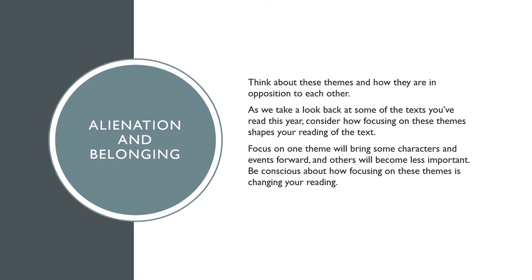Getting back to our themes for this lesson, we're going to look at alienation and belonging. These themes are really in opposition to each other — they're kind of opposite ends of the same continuum. We're going to look at how to apply these to some of the texts that you've hopefully read over this year. As we look at these themes, it's going to bring some elements of the work into a more sharp relief and make some things become less important. Think about how we're going to start to think about being a part of something, being separate from something, and how that shapes our reading of the text.